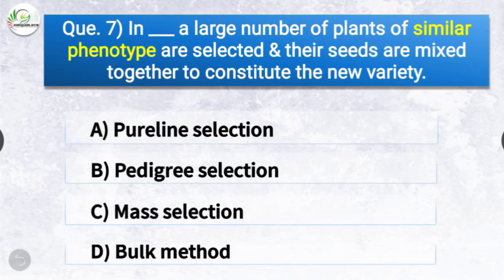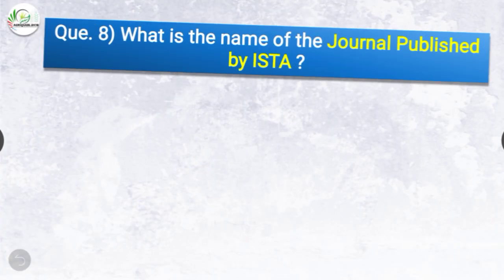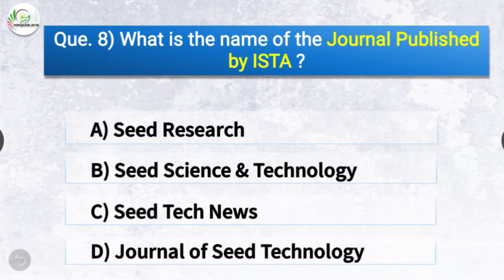Question number seven: In which method is a large number of plants of similar phenotype selected and their seeds mixed together to constitute a new variety? The options are pure line selection, pedigree selection, mass selection, or bulk method. The correct answer is option C — mass selection. In mass selection, a large number of plants of similar phenotype are selected and their seeds are mixed together to constitute the new variety.